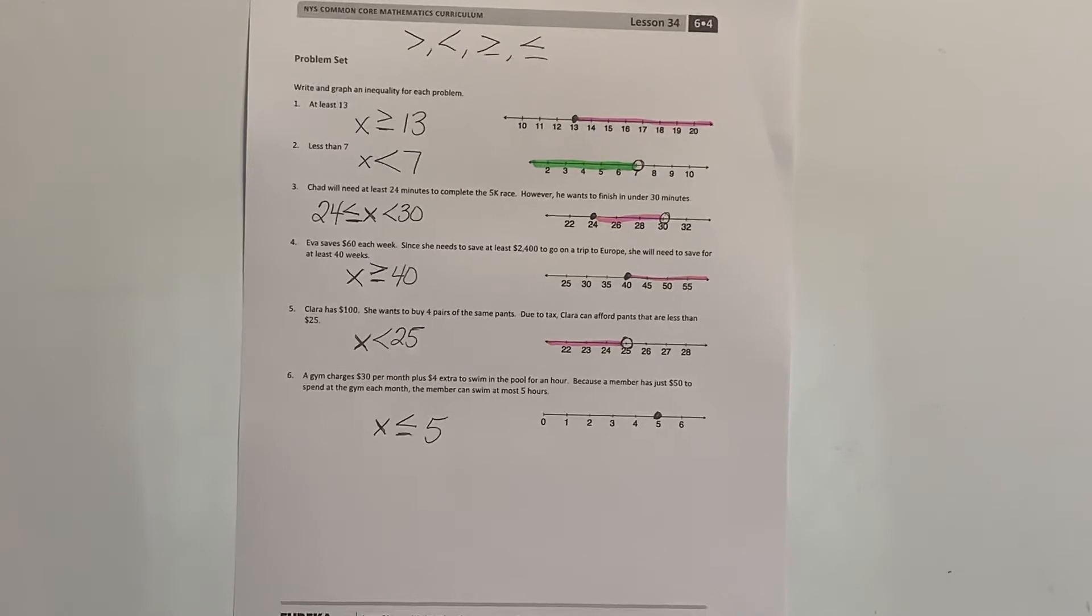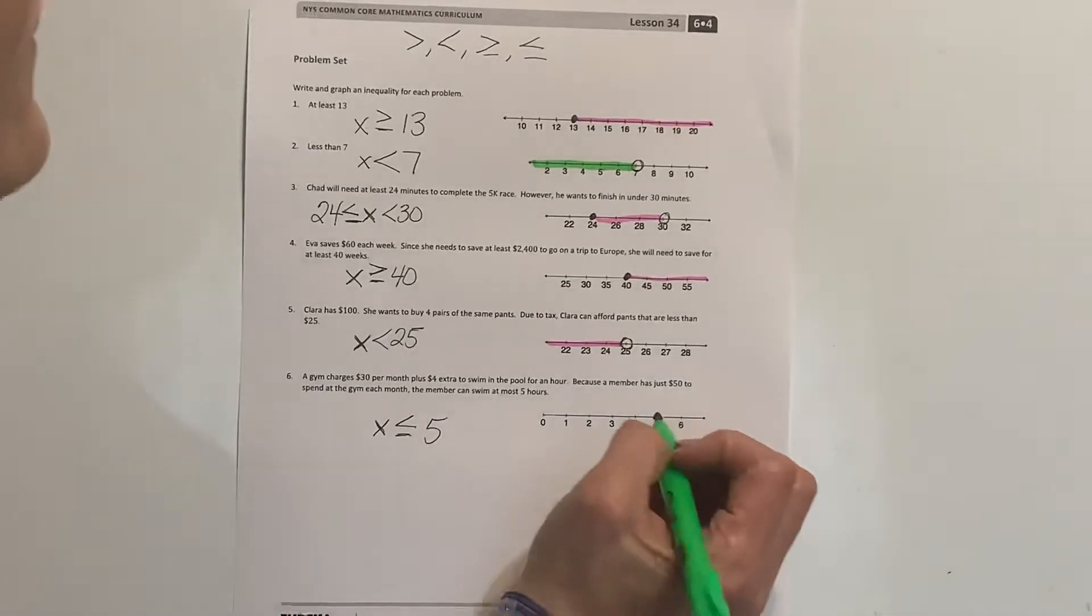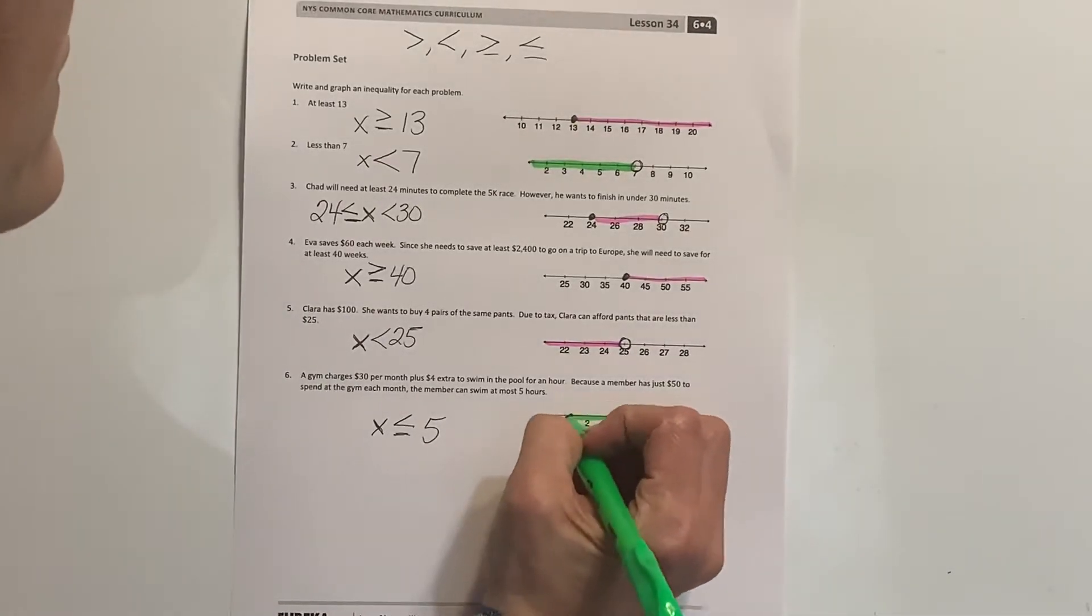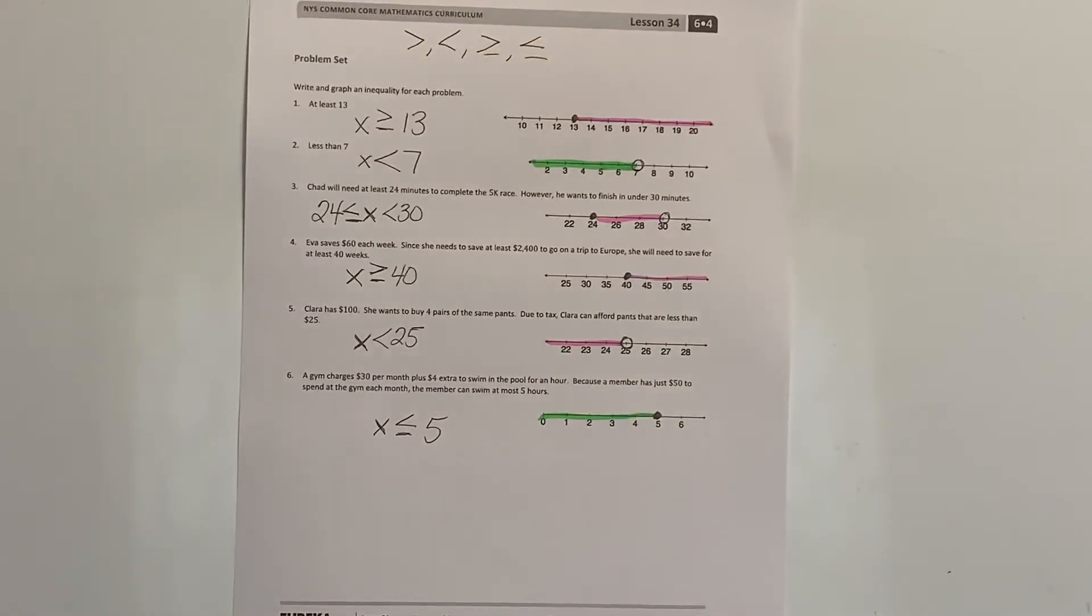When I'm looking at this, I know that I'm not going to be including six hours because six hours, that would be $24 and that would be over the $50 limit that they had to spend. So I'm going to have to go less than five hours. That's all they have in order to spend for that time at the gym.